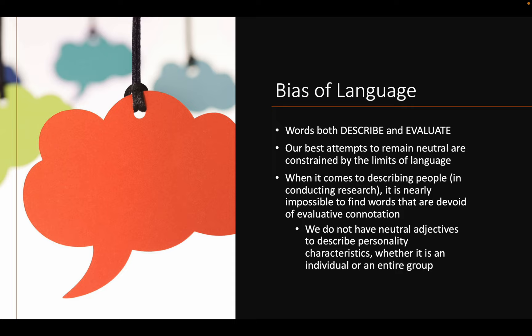The first part of critical thinking is the bias of language. When we talk about language, it serves many functions. One of the most common and important purposes is to help us describe phenomena — to describe events, situations, and people. For example, it will help us describe what something is and what it does.